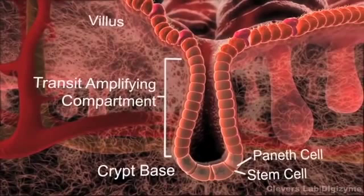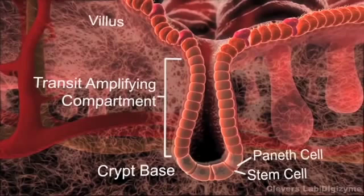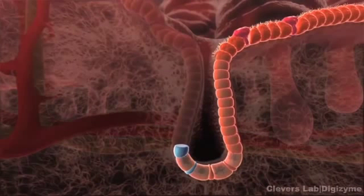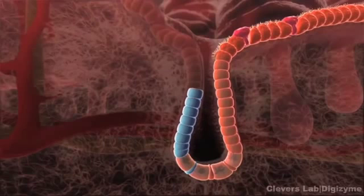Stem cells at the bottom of the crypt, located between Paneth cells, divide and make copies of themselves, and also make transit-amplifying cells. The transit-amplifying cells proliferate rapidly and move up the walls of the crypt.